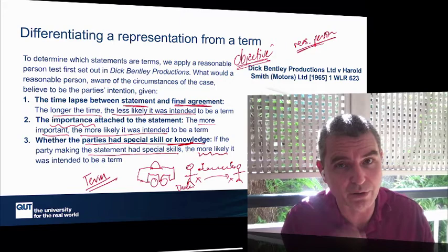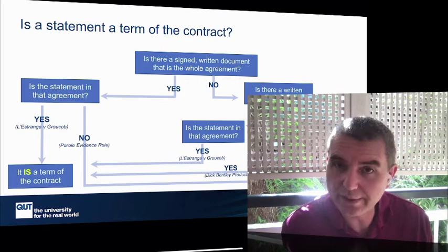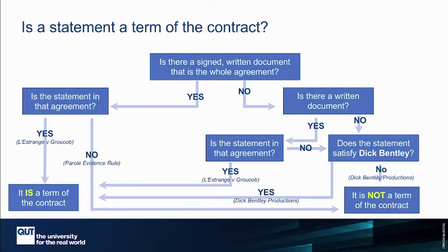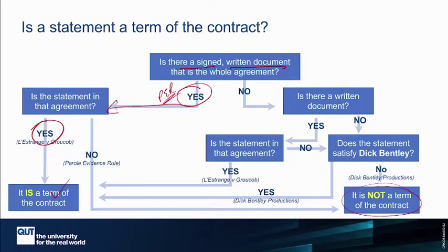To help work this out, here's a flow chart. If we have a valid contract — agreement, intent, consideration, and it's enforceable — we ask: is there a signed written document? If yes, is the statement in that agreement? If yes, it's a term — parol evidence rule applies. If there's a signed written agreement but the statement is not in it, the parol evidence rule says it's not a term.